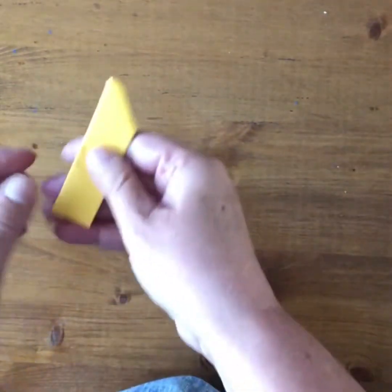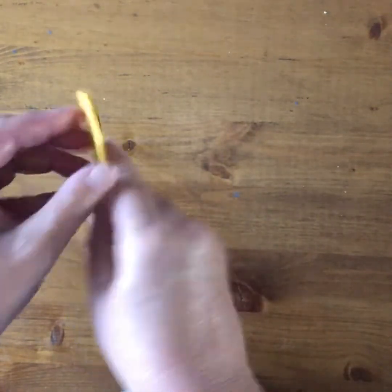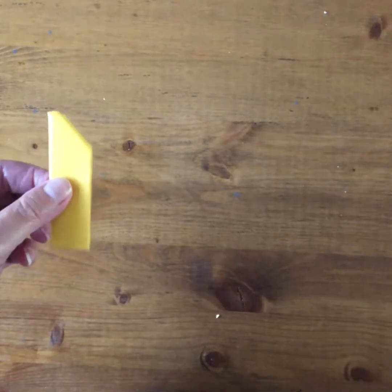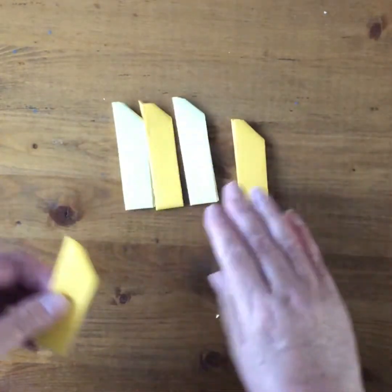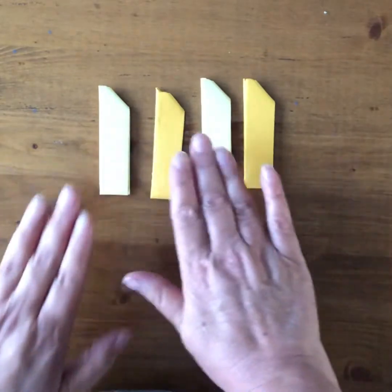So after you've done this, you do this three more times so that you have three arms of the spinning star made. And I've got mine already ready here, so I've got my two different colors and then one, two, three, four.